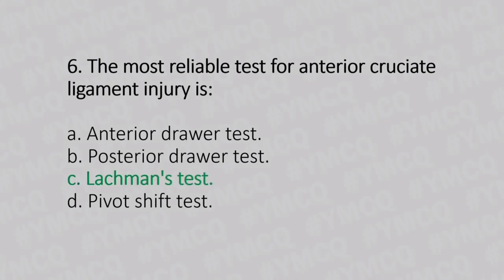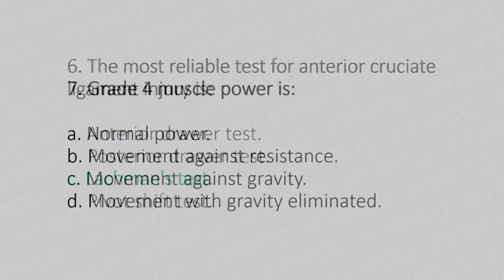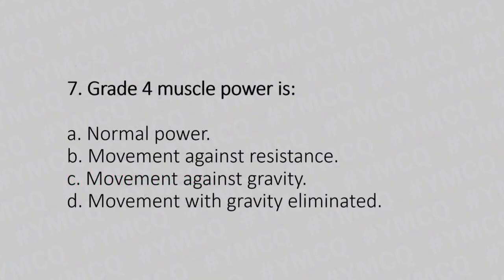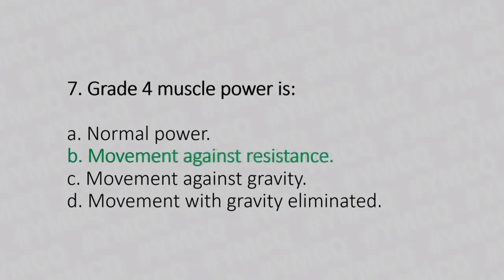Now let's move to question number 7. Grade 4 muscle power is. Option A: normal power. Option B: movement against resistance. Option C: movement against gravity. Option D: movement with gravity eliminated. And the answer is Option B, movement against resistance.